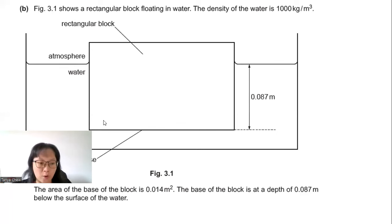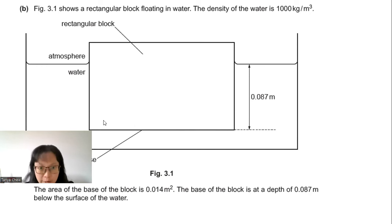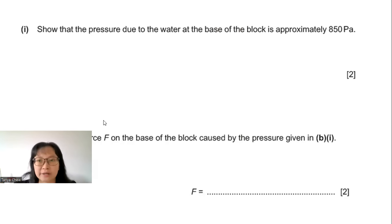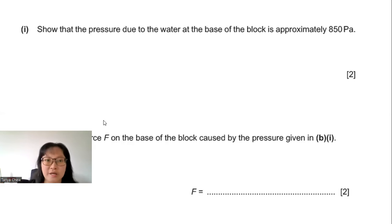Part B: A rectangular block floats in water. The density of water is 1000 kg/m³, the area of the base is 0.014 m², and the base is at a depth of 0.087 m below the water surface. Part 1: Show that the pressure due to the water at the base of the block is approximately 850 Pa.